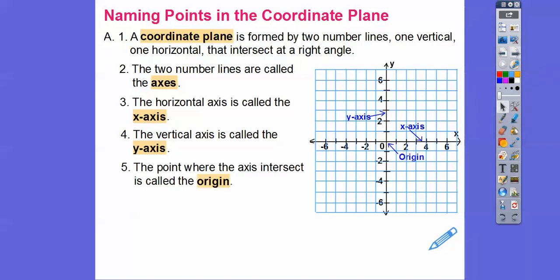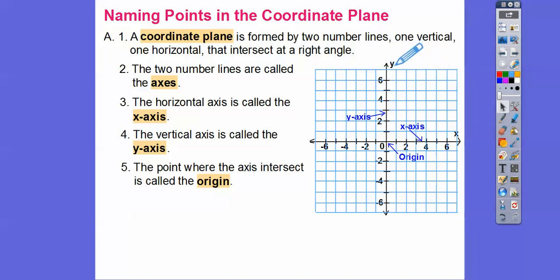Right where they intersect is called the origin — that's where it's zero for both of them. We put a little X here to label the X-axis, and a little Y to label the Y-axis.